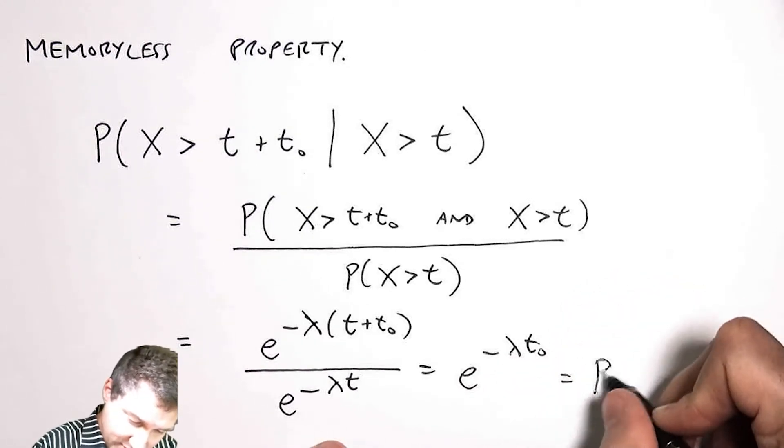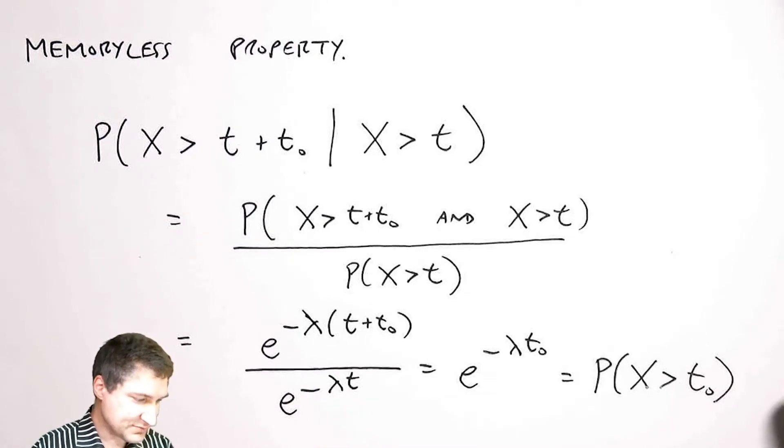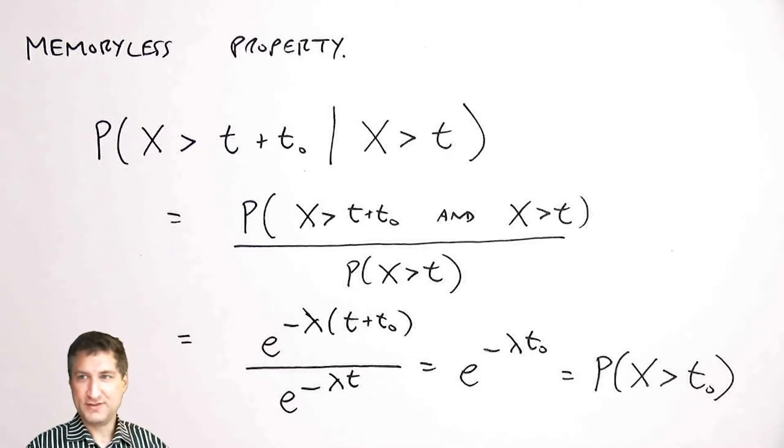Which is just the probability that x was greater than t_0 in the first place. So the idea here is that...